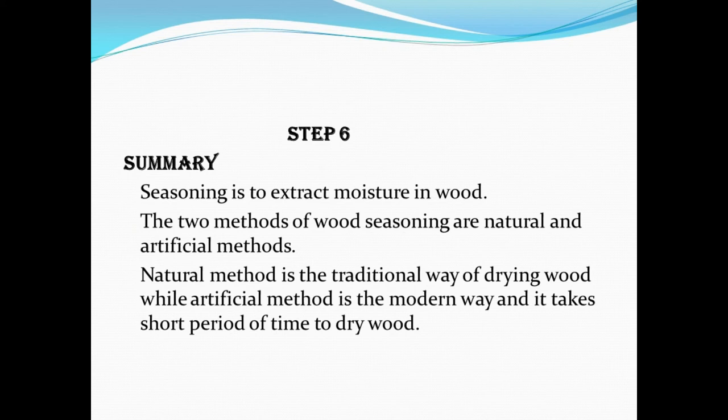Step 6 — Summary: Seasoning is to extract moisture in wood. The two methods of wood seasoning are natural and artificial methods. Natural method is the traditional way of drying wood, while artificial method is the modern way to dry wood. I'll see you next time.